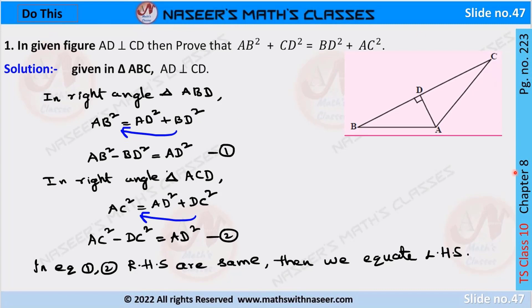Number 223, chapter 8, similar triangles. In the given figure, AD is perpendicular to CD. Then prove that AB square plus CD square is equal to BD square plus AC square.